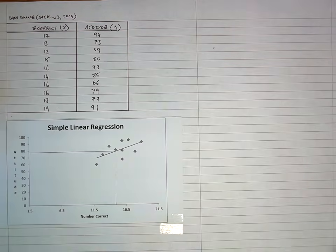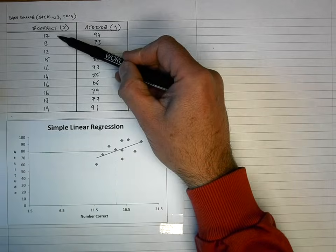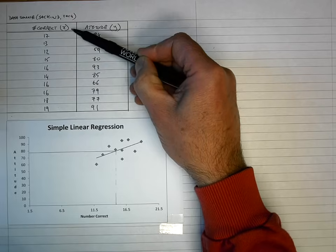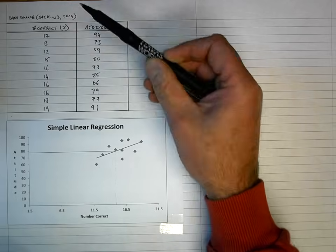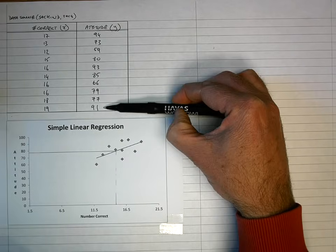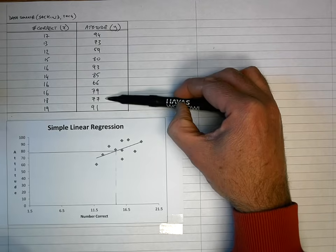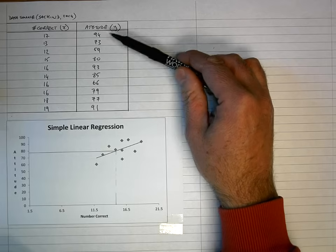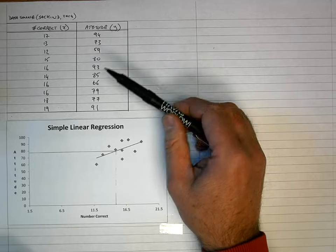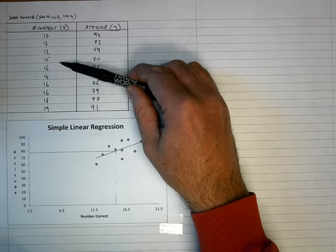Before we start, let's take a look at the sample data that we're going to use. My first set of data are the number of questions correct out of a possible 20 that 10 of my students have taken in a test, and I'm going to designate these as my x-values. My y-values are each individual student's attitude by percent to taking tests.